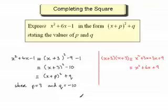So I hope you've got the idea behind writing the quadratic expression x squared plus 6x minus 1 in the form (x plus p) all squared plus q, which we call completing the square.